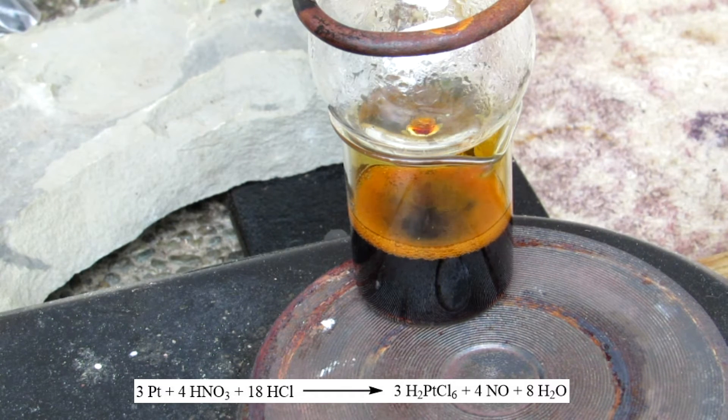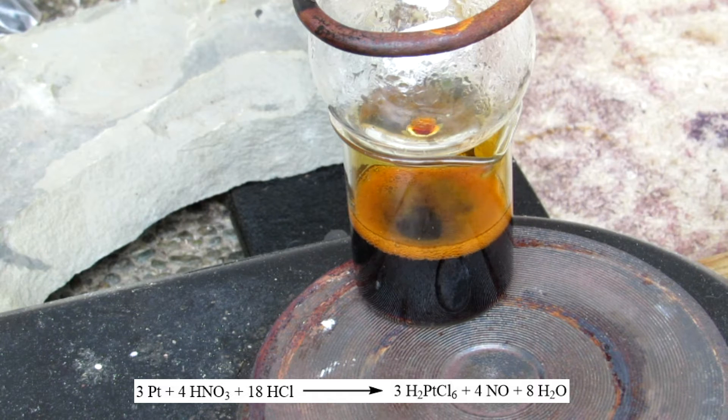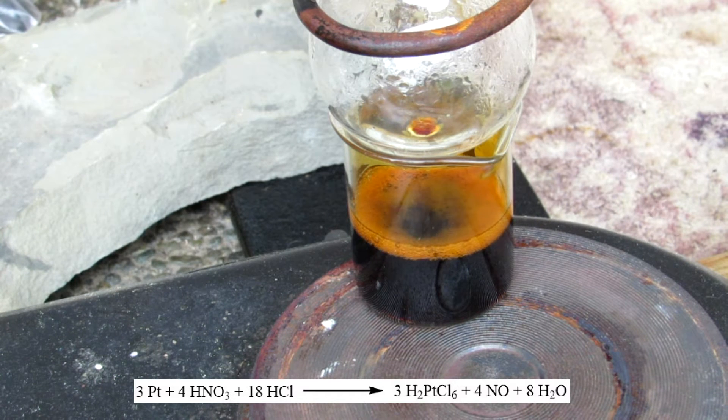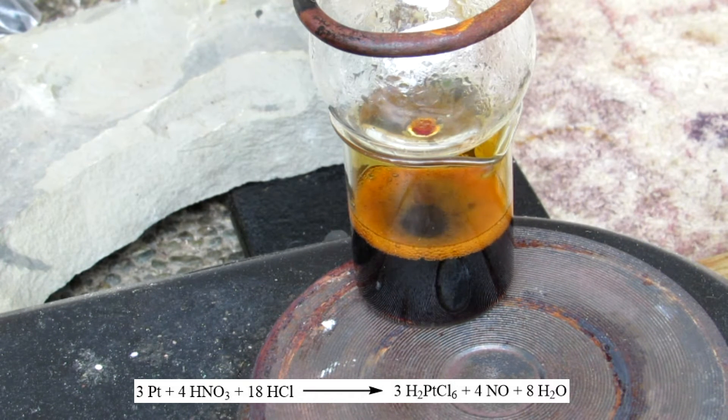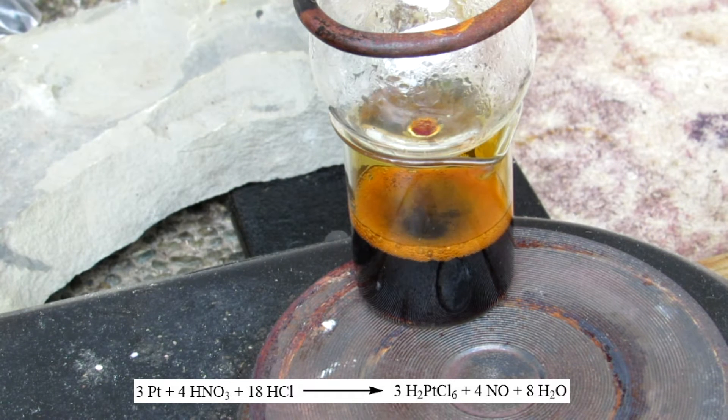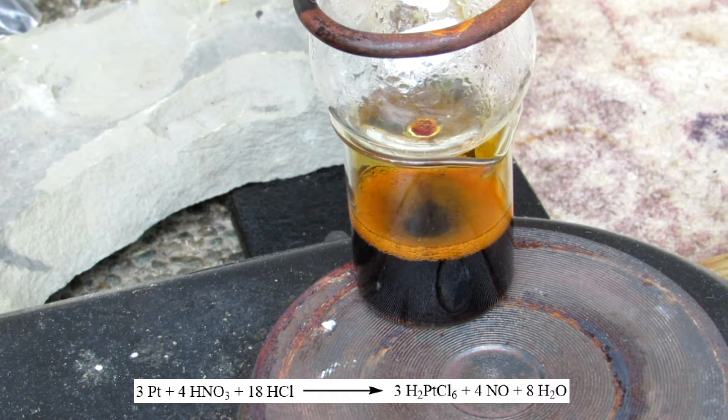Heating the aqua regia mixture will help speed up the Platinum dissolution, as the dissolution occurs quite slowly at room temperature. As the Platinum reacts with the aqua regia, hexachloroplatinic acid is formed, which is a deep orangish-red color in solution.